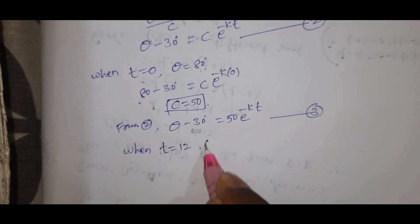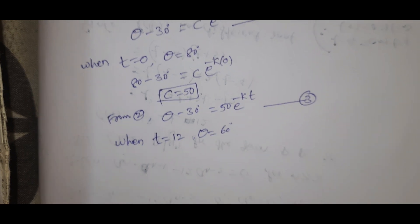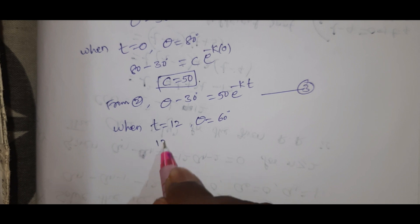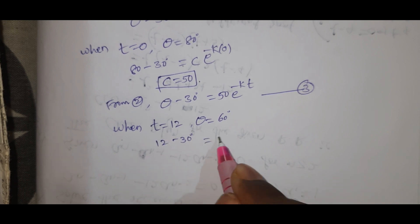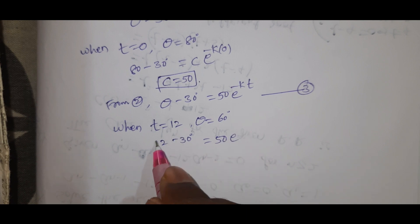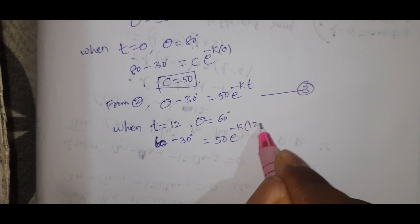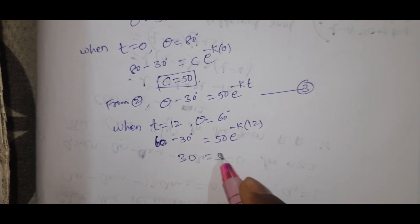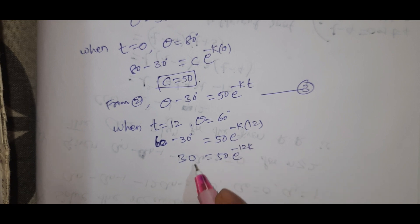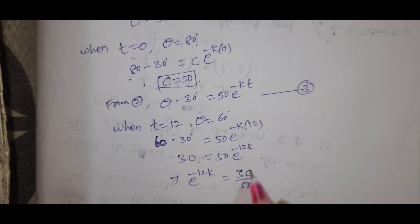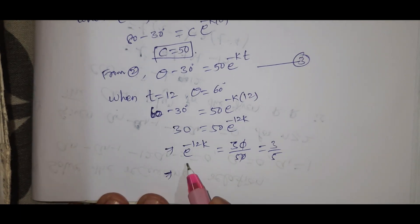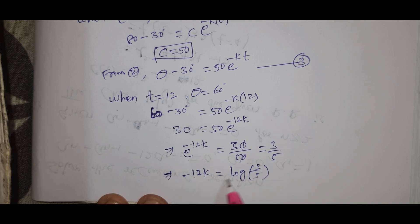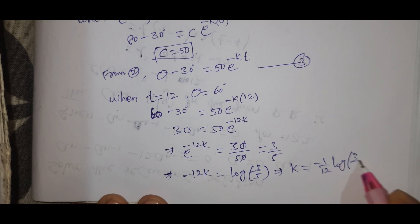Now applying the condition when t equal to 12 minutes, theta equal to 60 degrees: 60 minus 30 equal to 50 into e power minus k times 12. So 30 equal to 50 e power minus 12k, which implies e power minus 12k equal to 30 by 50, that is 3 by 5. Therefore minus 12k equal to log of 3 by 5, so k equal to minus 1 by 12 log of 3 by 5.